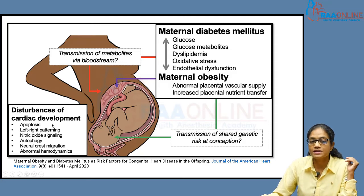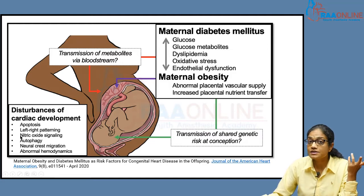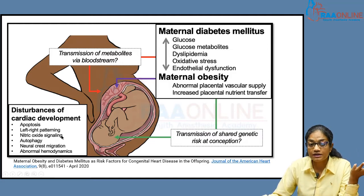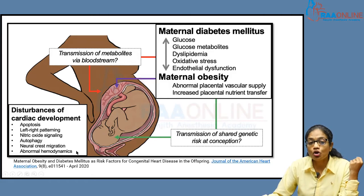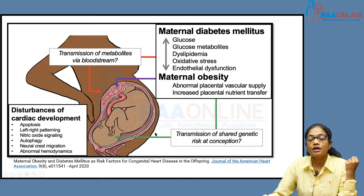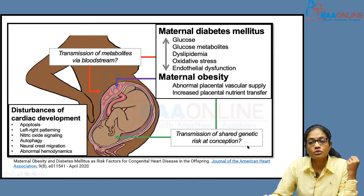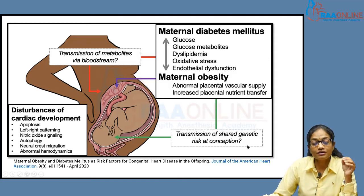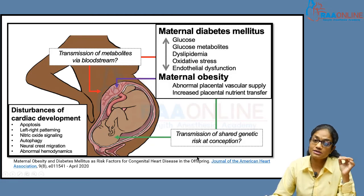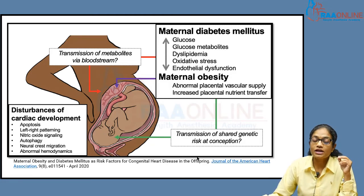A significant number of metabolites transmitted through the bloodstream cause disturbances of cardiac development such as apoptosis, altered left-right patterning, cytosine inversions, altered nitric oxide signaling, neural crest migration abnormalities, and abnormal hemodynamics. There are quite significant numbers of changes happening in the fetus.